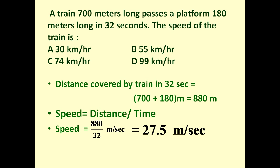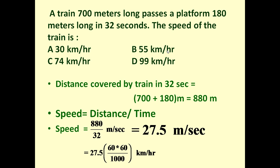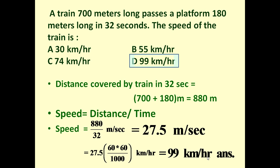All the answer options are given in kilometers per hour, so we need to convert 27.5 meters per second into kilometers per hour. Since 1 kilometer equals 1000 meters, we divide by 1000. And since 1 hour equals 60 into 60 seconds, we multiply by 3600. So 27.5 meters per second equals 99 kilometers per hour. This is the answer.